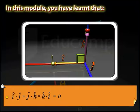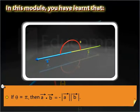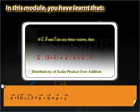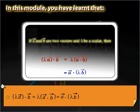The dot product of unit vectors — that is, I-cap dot J-cap, J-cap dot K-cap, and K-cap dot I-cap — is equal to 0. The dot product of two vectors is the negative of the product of their magnitudes when the angle between the two vectors is equal to pi. The dot product of vector A with the sum of vectors B and C is equal to the dot product of vectors A and B plus the dot product of vectors A and C. The dot product of lambda times vector A with vector B is equal to lambda times the dot product of vectors A and B, which is further equal to the dot product of vector A and lambda times vector B.